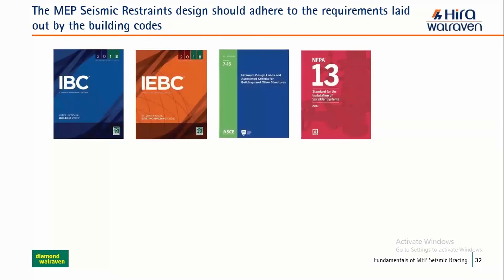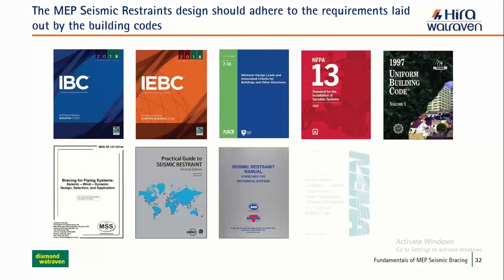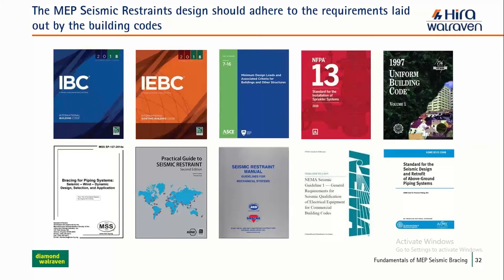When designing a seismic restraint system, several standards must be considered. The main standards include: International Building Code (IBC), International Existing Building Code, American Society of Civil Engineers (ASCE), NFPA, and Uniform Building Code (UBC). Some projects require UBC, some require IBC — both must be considered based on specification. Additionally, seismic restraint standards from ASHRAE, SMACNA, NEMA, and ASME are used for designing any seismic system for non-structural components.